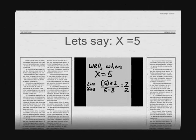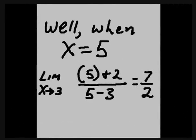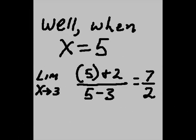let's say x equals 5. When x equals 5, the limit as x approaches 3 of 5 plus 2 in the numerator equals 7, and 5 minus 3 in the denominator equals 2.